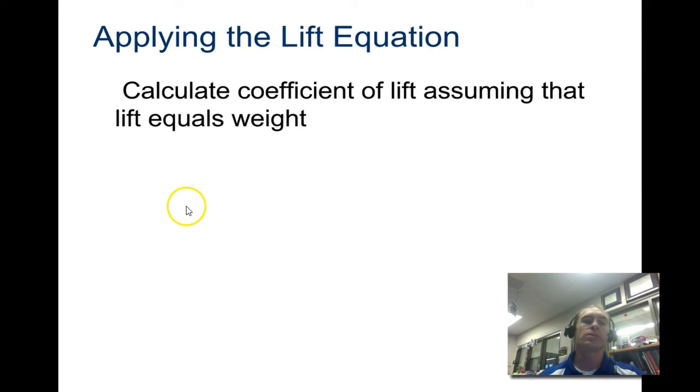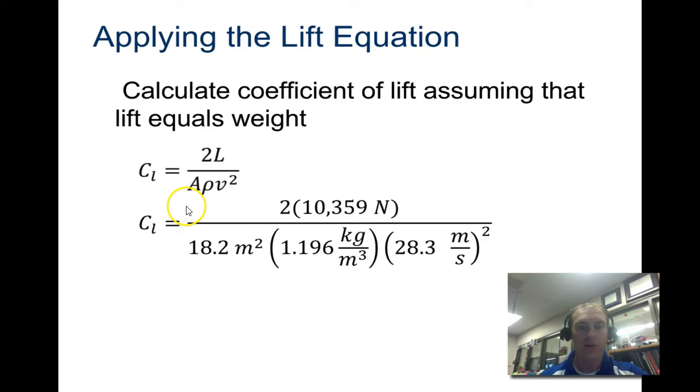Now we use those numbers to calculate the coefficient of lift: CL = 2L / (A ρ V²). The lift that we want has to equal the weight, so that's 10,359. We were given the area, and we calculated density and velocity. We ended up with a coefficient of lift of 1.19.